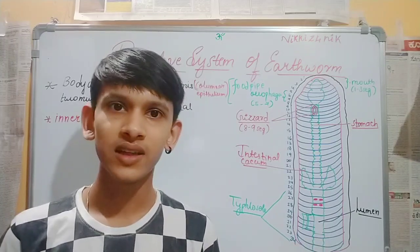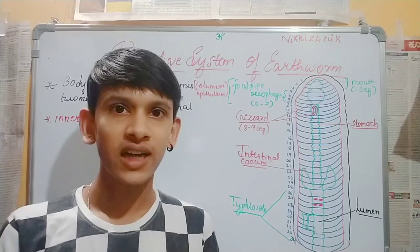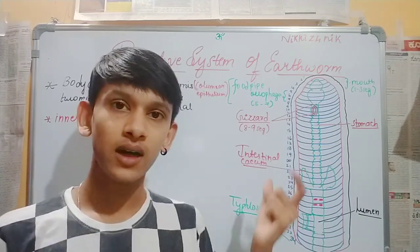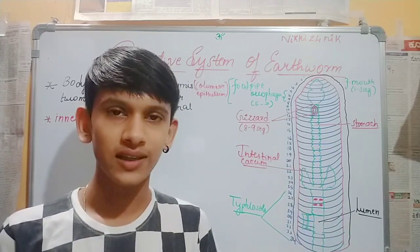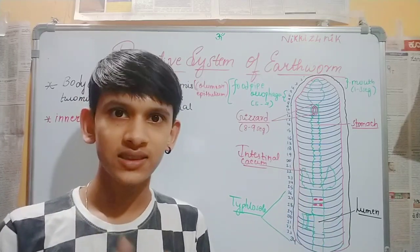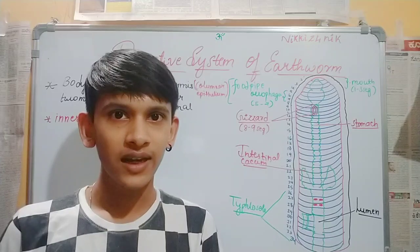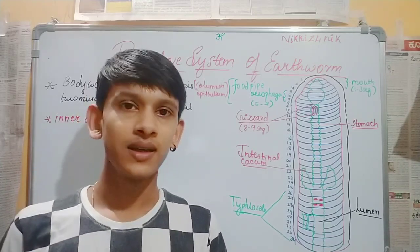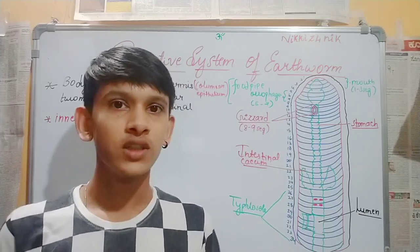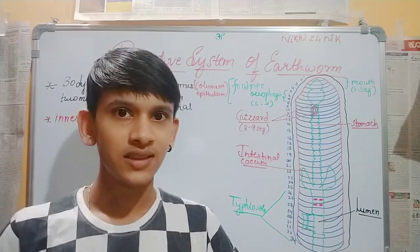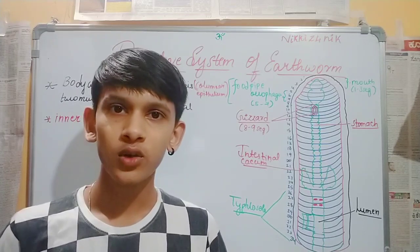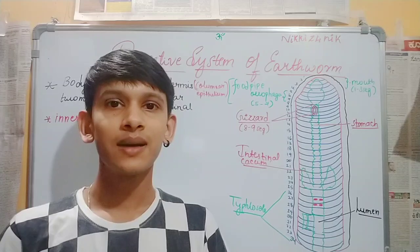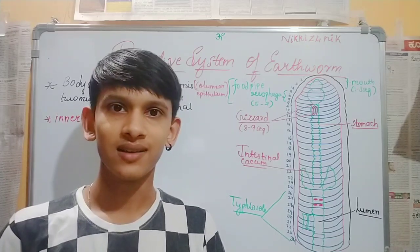For example, if you consume leaves with cellulose and starches, we cannot absorb them directly. The digestive system breaks them down into simple small units, converting them to glucose and maltose. This was all about the digestive system of earthworm. I hope this video will be beneficial to you. Thank you.